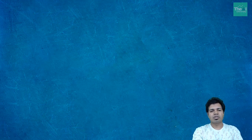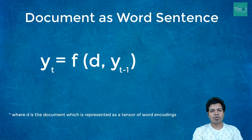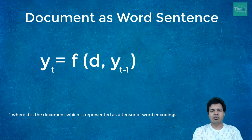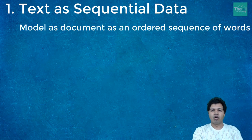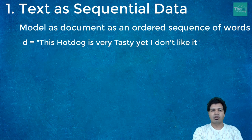To get there, you first need to imagine a document as a word sentence, where D represents a document and the document is a tensor of word encodings. The first step is text as sequential data — we can model a document as an ordered sequence of words. The document contains the words in a certain order, as you can see on screen: 'this hot dog is very tasty yet I don't like it.'